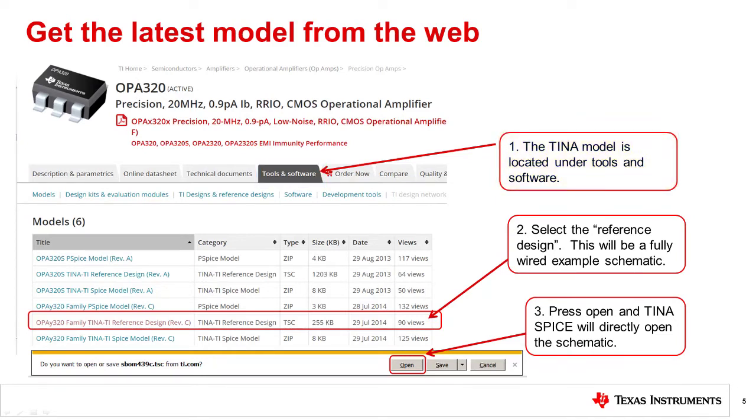In some cases, this model is included with the TINA SPICE software package, but it is better to get the model from TI.com as this assures that you get the most up-to-date model. Also, it is recommended that you download and open the reference design as it is a pre-wired test circuit that you can use as the basis for your design.